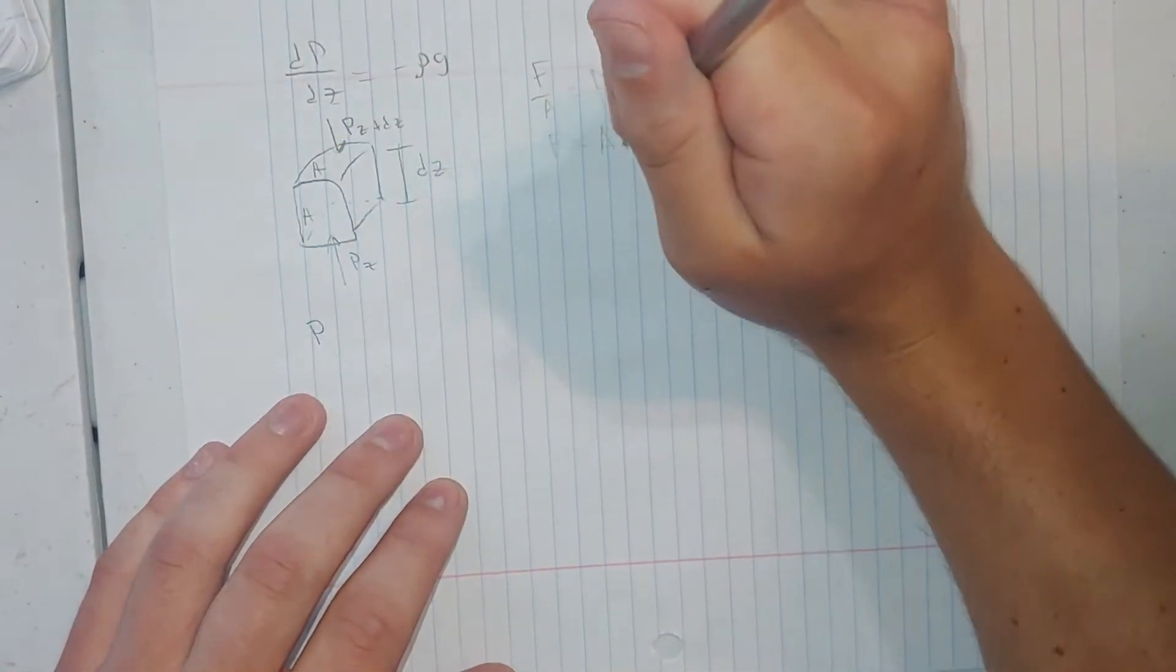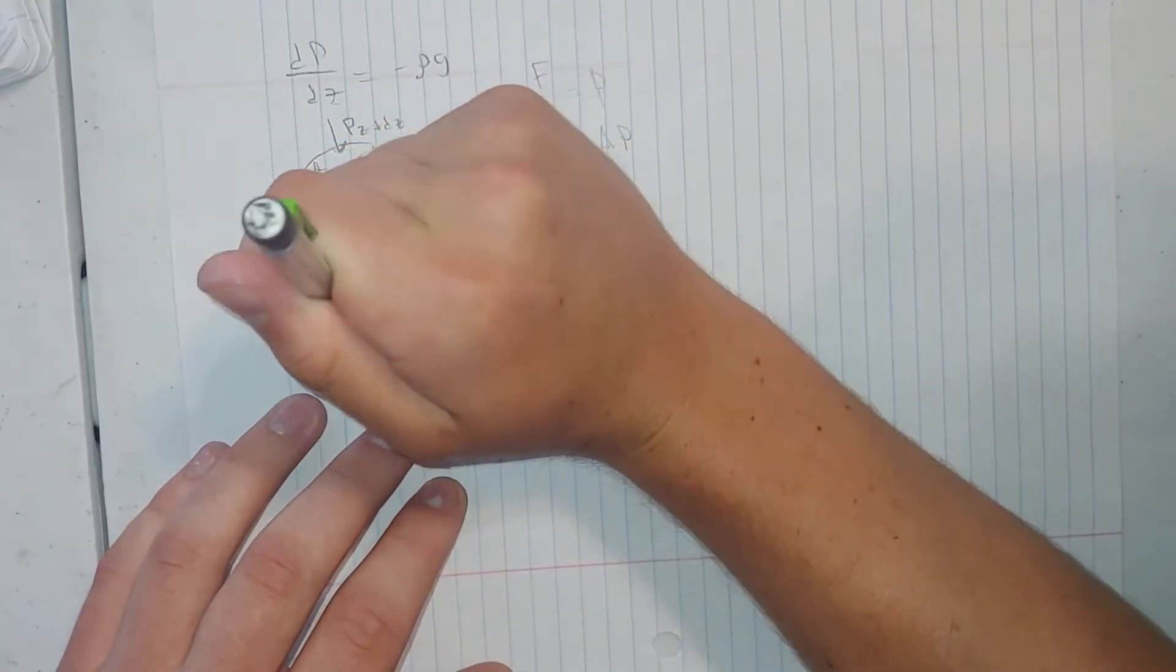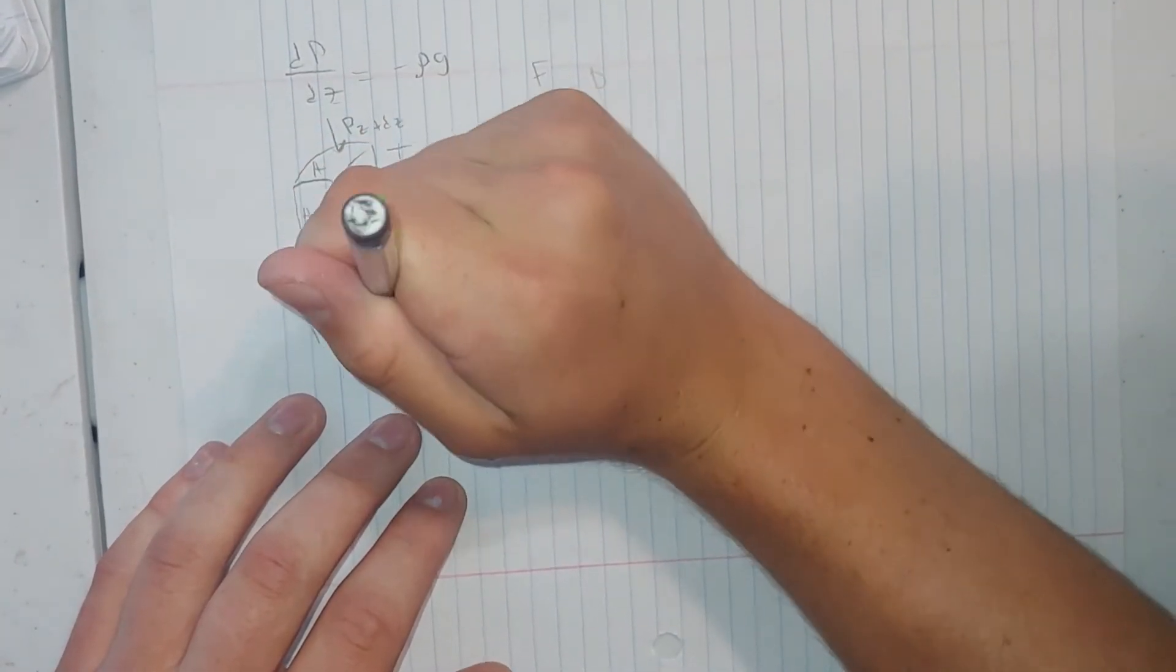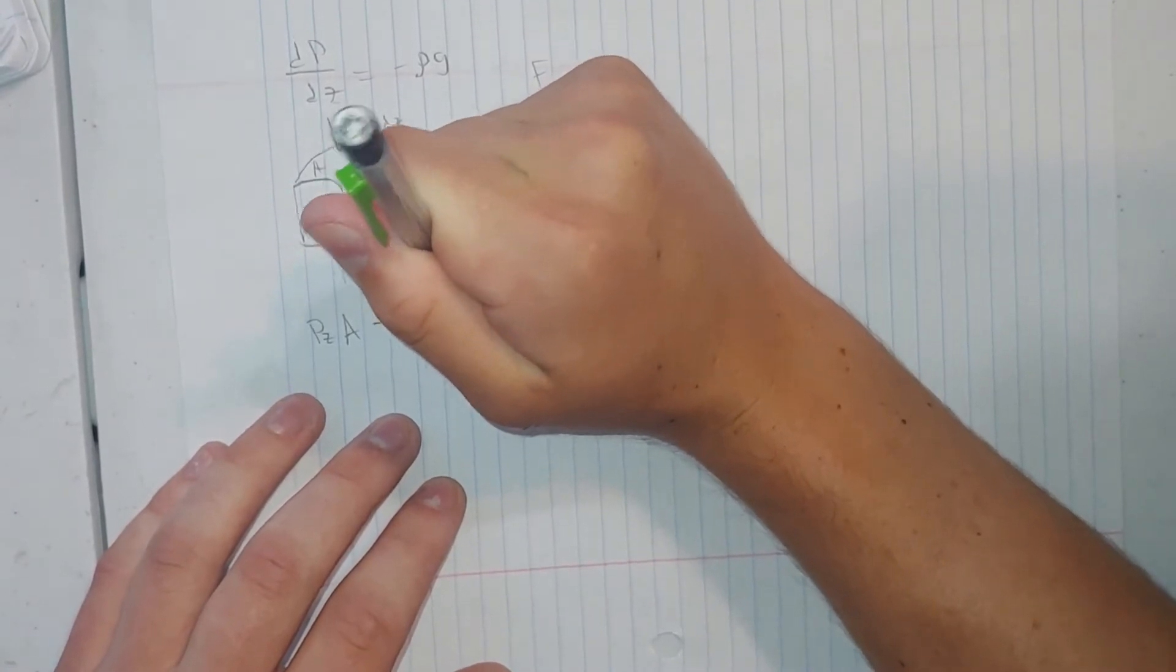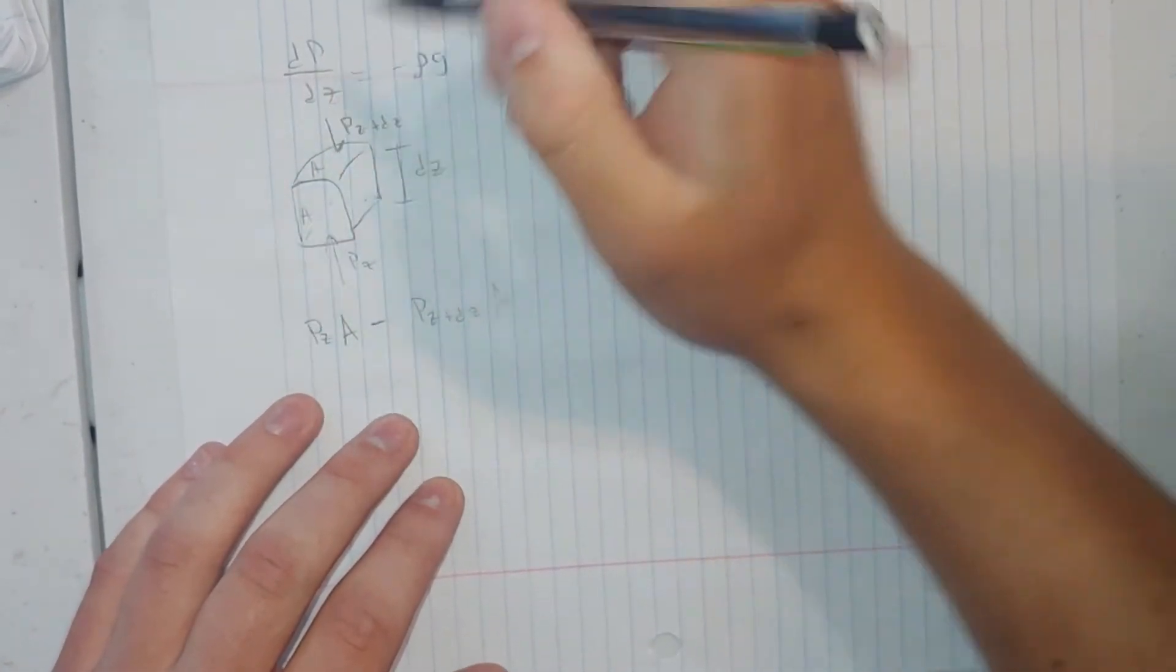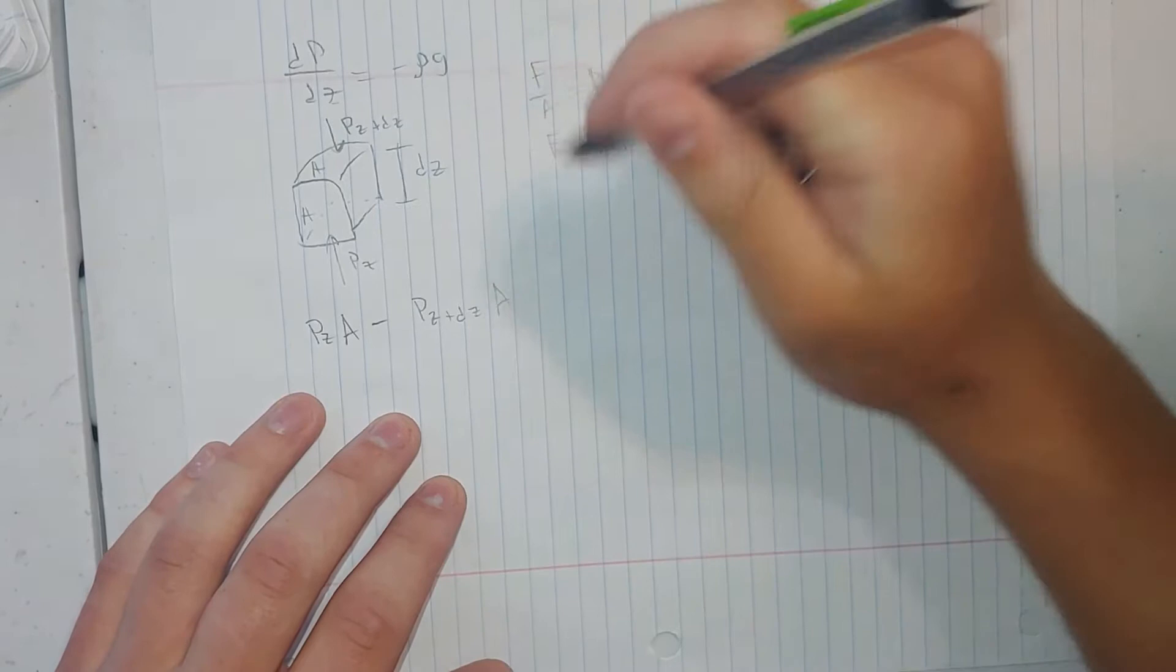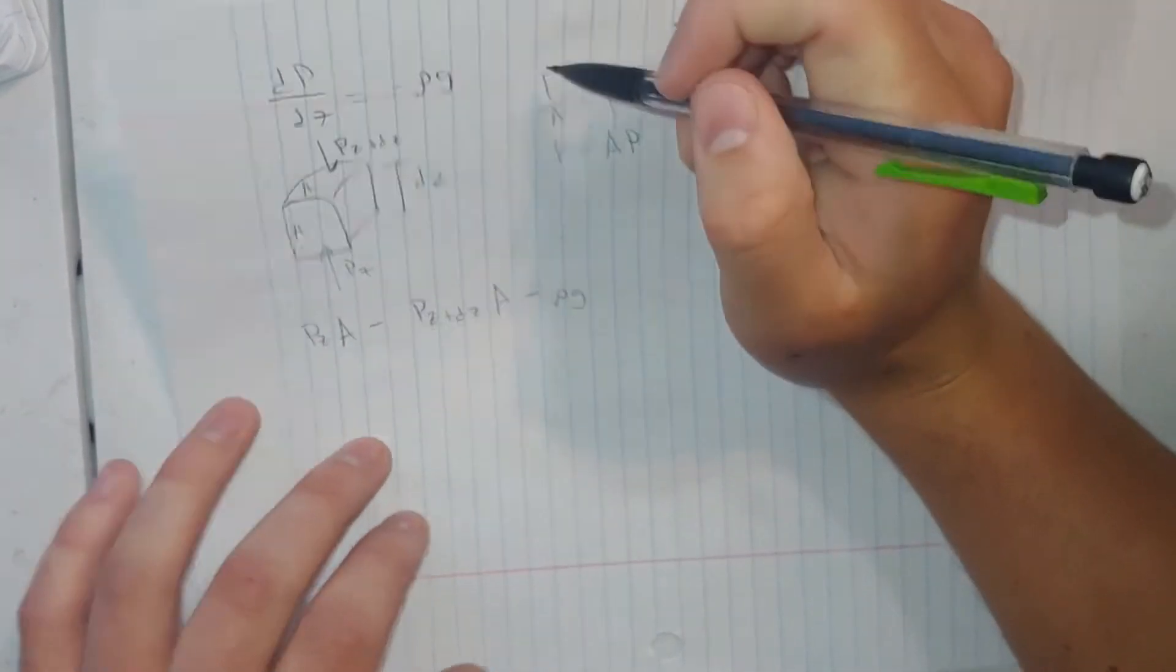So we are going to be able to write pressure times area of the bottom, which is pz times A, minus p(z+dz) times the area on the top, minus the weight of the entire box.